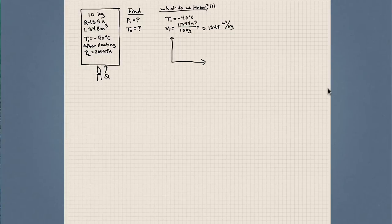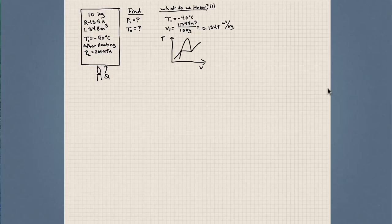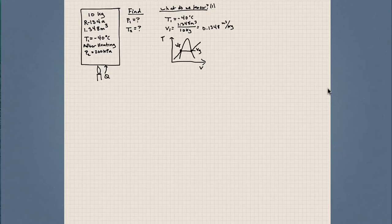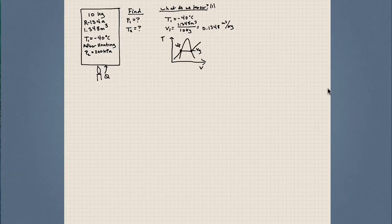To help us visualize what this means, I'm going to draw a T-V diagram. We have our constant pressure line and our saturation dome. If we could determine what VF — our saturated liquid state — and VG — our saturated vapor state — are, we could determine where on this line we fall and where we are on this thermodynamic plot.